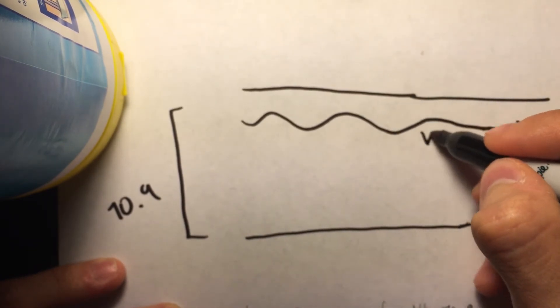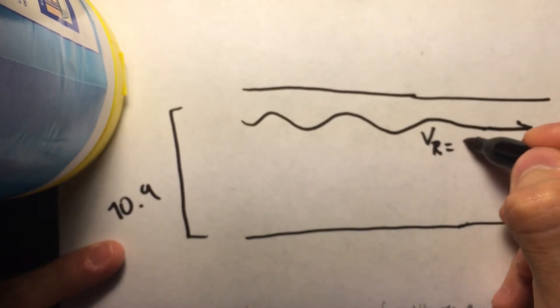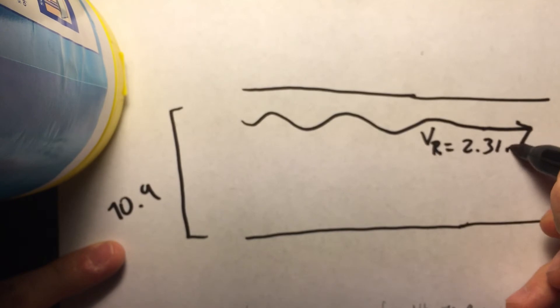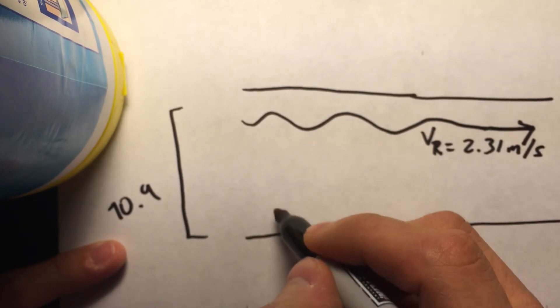So, we have a velocity of river given to us of 2.31 meters per second. And it says that the pilot maintains a bearing, the direction in which the boat points, perpendicular to the river. So, the boat is traveling the width of the river, and it's going up.